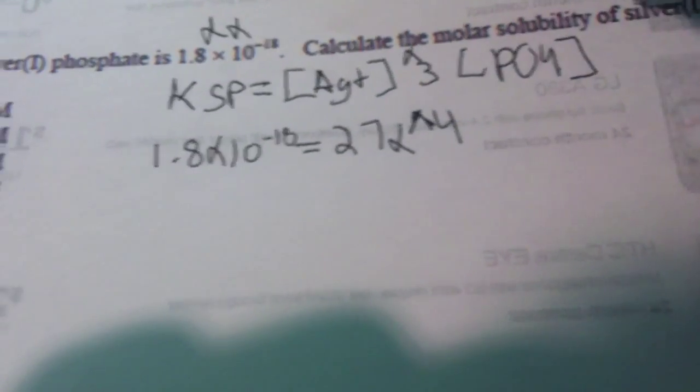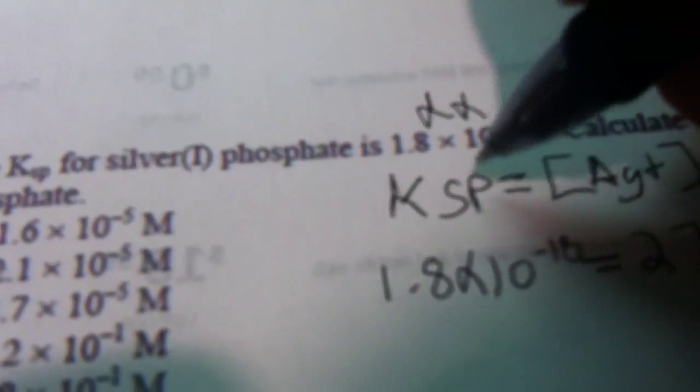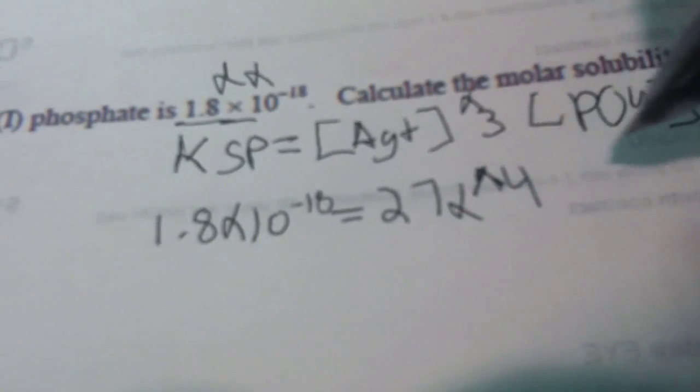So that's the x times x. So I set it equal to the KSP, which is 1.8 × 10⁻¹⁸ as they gave us, and after distribution I got 27x⁴.